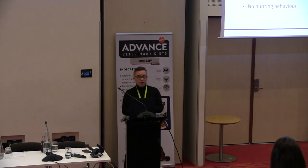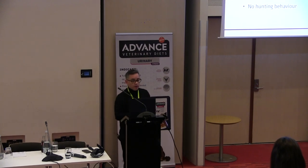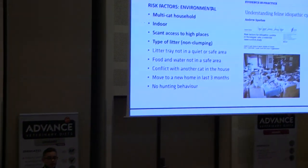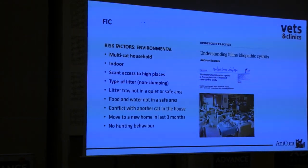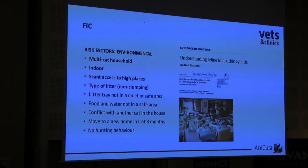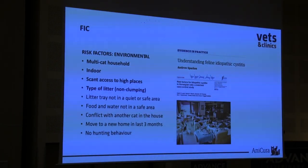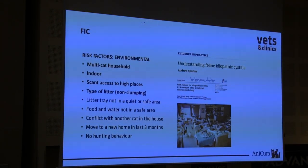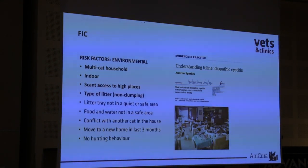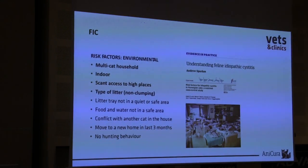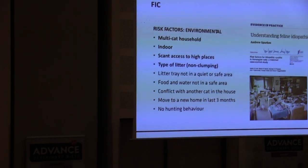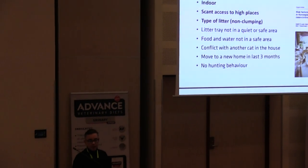There are other things to consider: the litter tray may not be in a safe area, food and water may not be in a safe area, and conflict with another cat in the house. That is very important — the socialization inside the cat household influences stress and behavior. Also, no hunting behavior has been associated, but it is not strongly evident. This is another thing we have to consider when we treat a cat with feline cystitis.